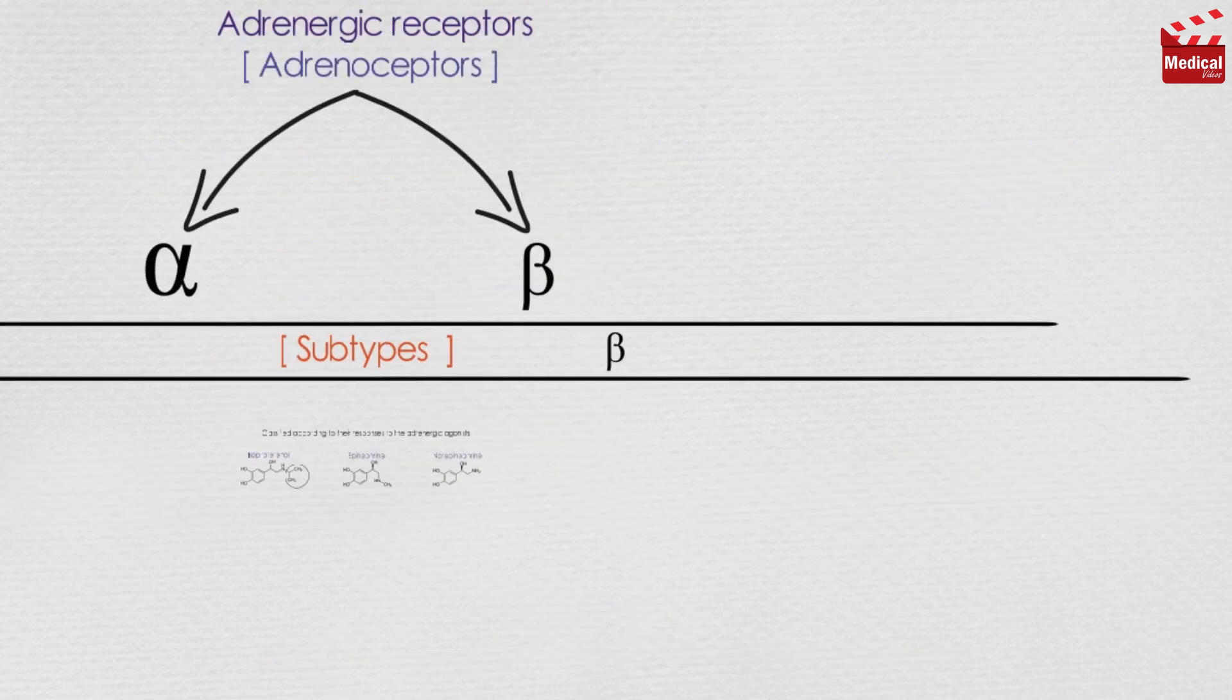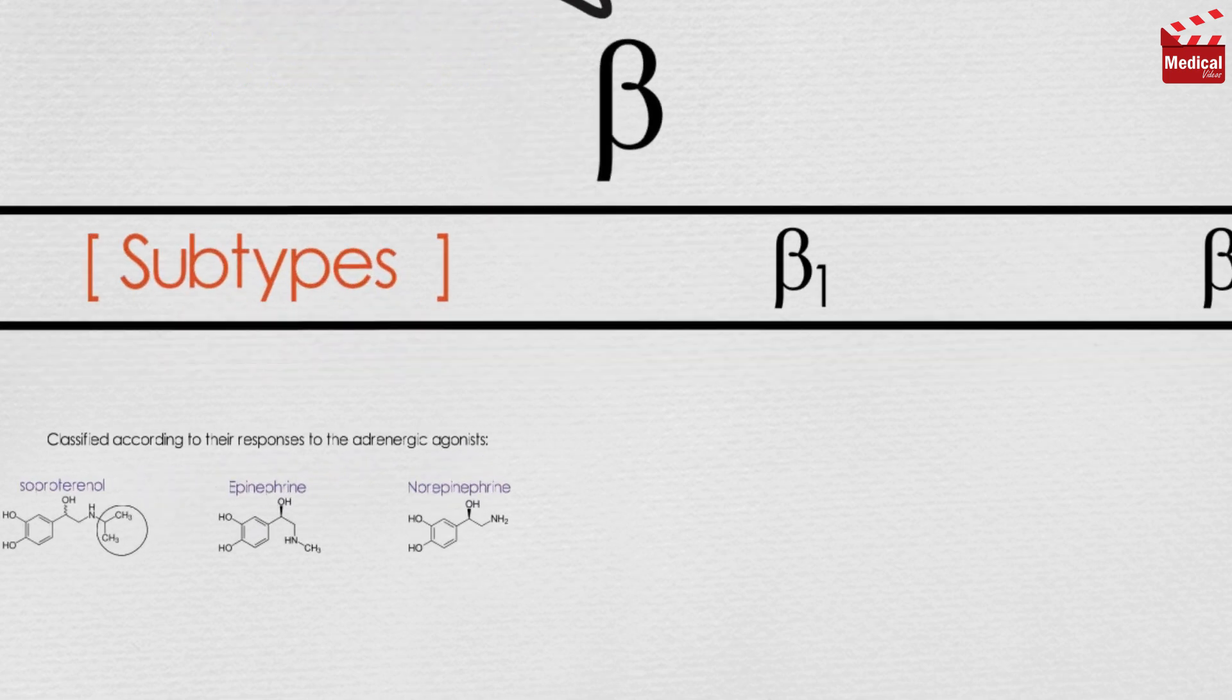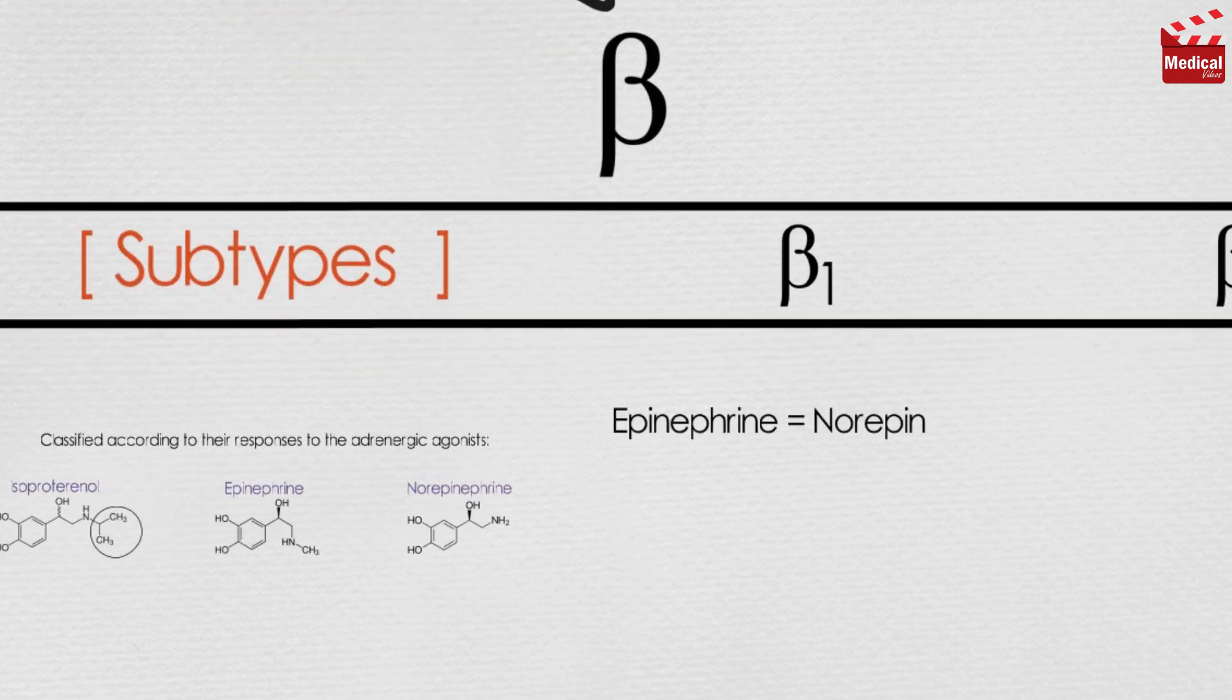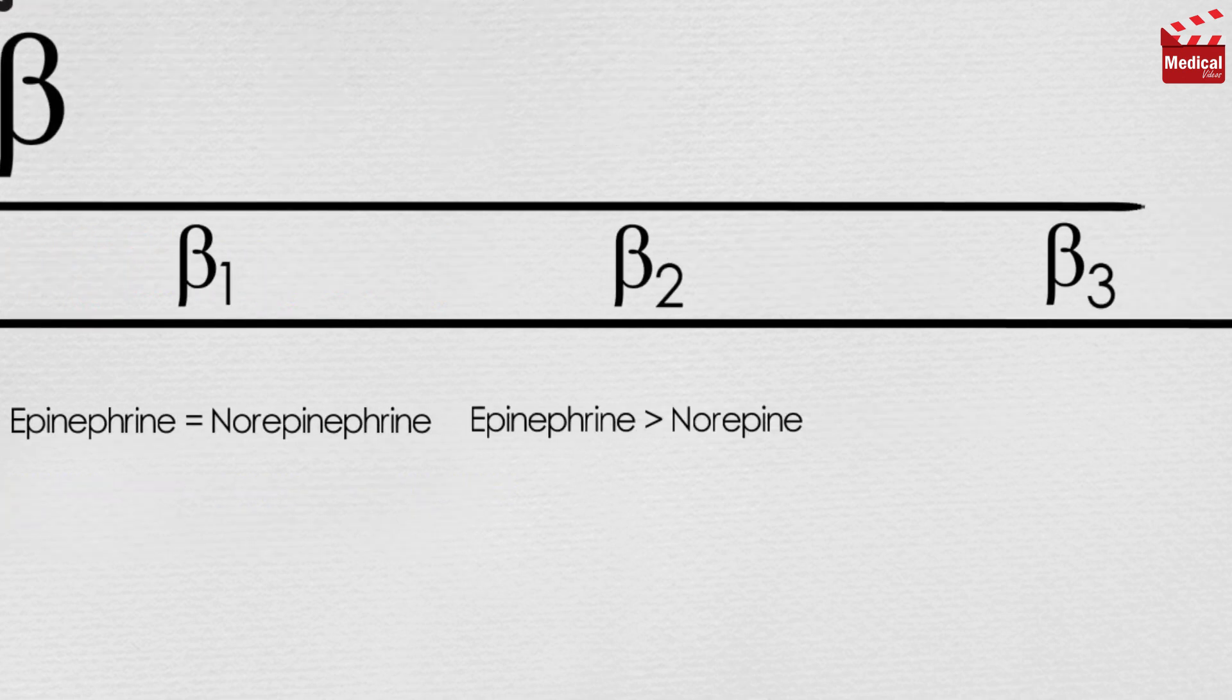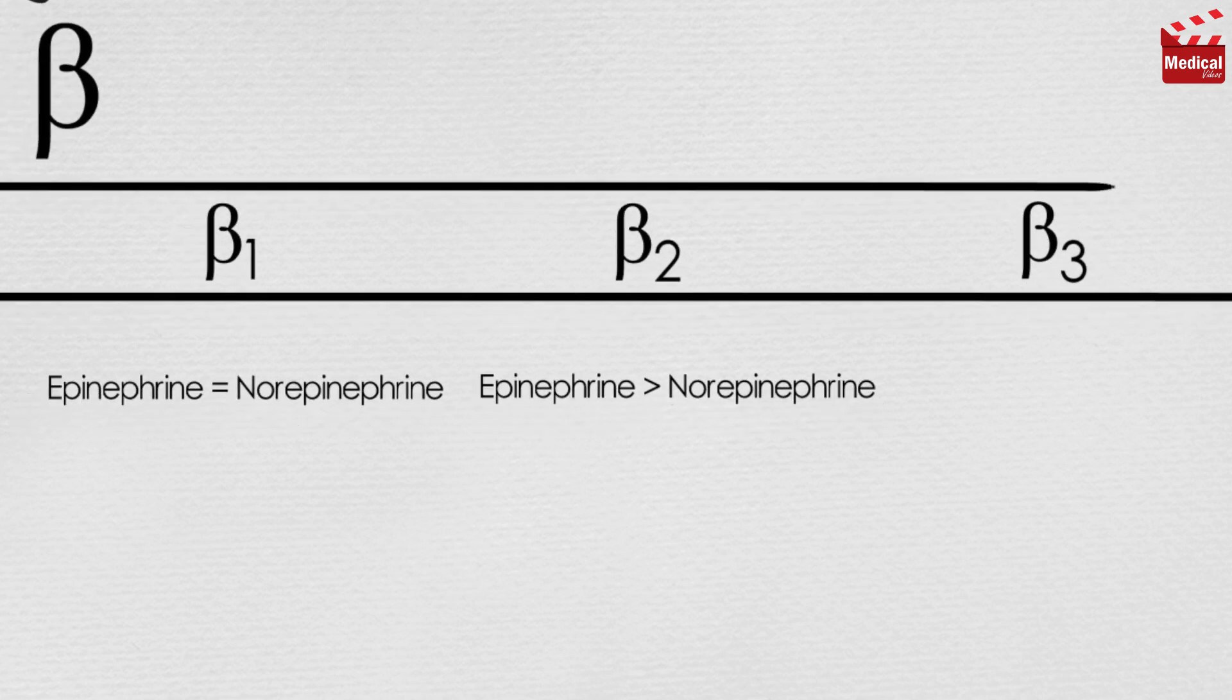Beta receptors are subdivided into three major subgroups: beta 1, beta 2, and beta 3, based on their affinities for adrenergic agonists and antagonists. Beta 1 receptors have approximately equal affinities for epinephrine and norepinephrine, and beta 2 receptors affinity for epinephrine is higher than for norepinephrine.